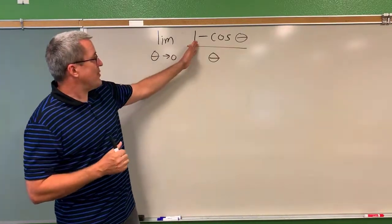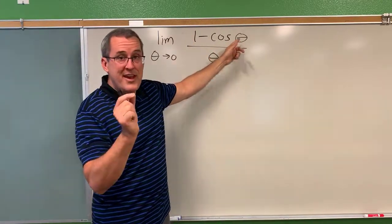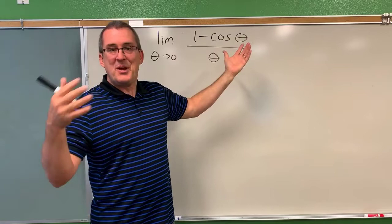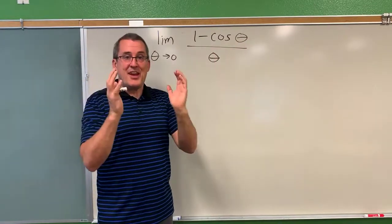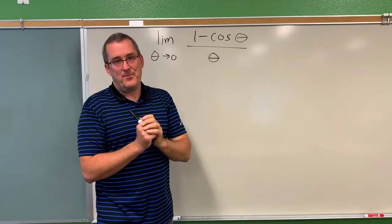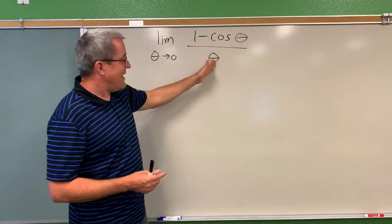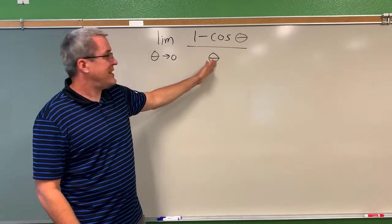So in this case, the function that we're examining is 1 minus the cosine of theta. Remember, theta is just a Greek letter. We could have used x, but I'm using theta here because it's often used to represent an angle measure. So 1 minus the cosine of an angle measure in radians, all divided by theta, that angle measure in radians.